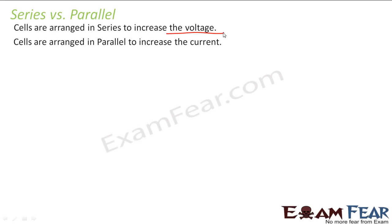Why will you arrange cells in series or parallel? What is the practical application? Let us suppose you have some 10 batteries with you and each of them has a different EMF — one is 2 volts, one is 3 volts, one is 10 volts, one is 200 volts, and so on.